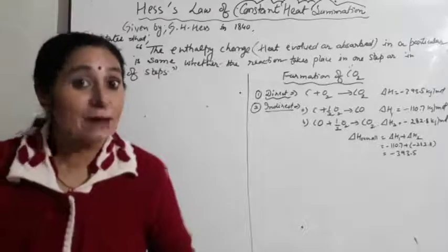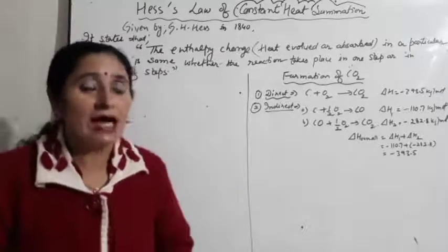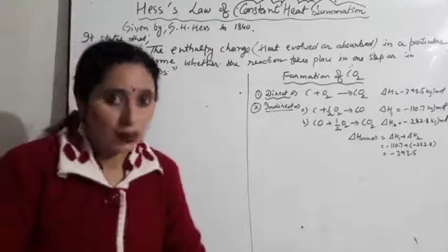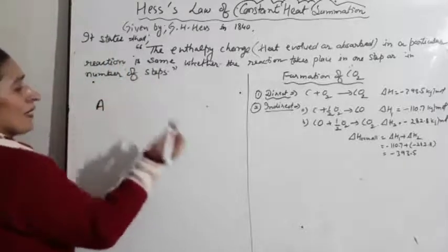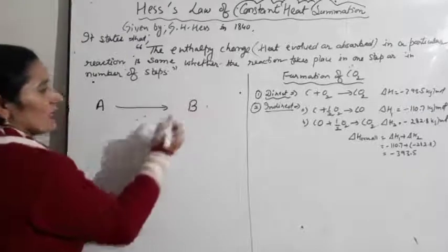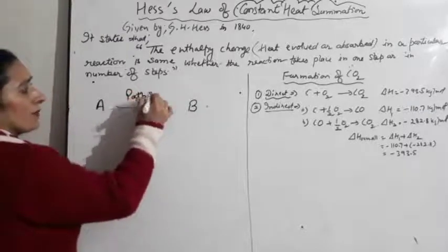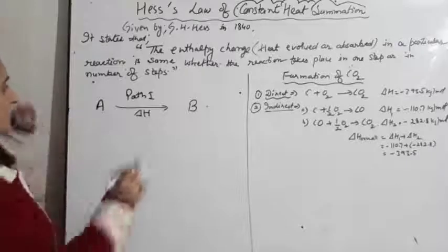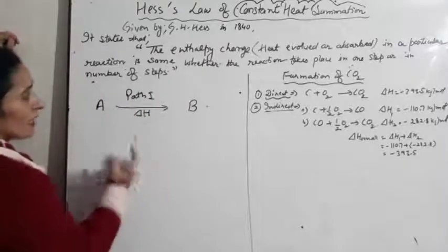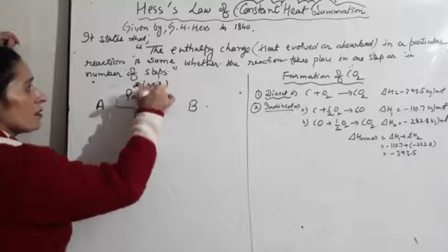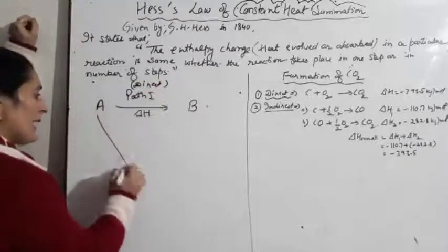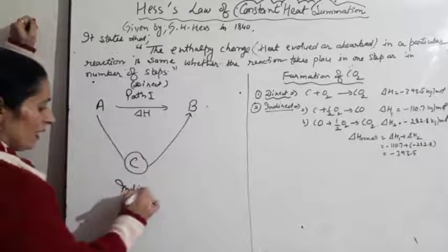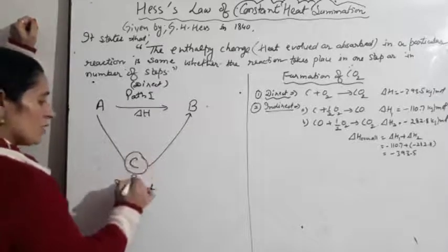Hess was a Russian chemist who gave this law after studying the mechanism of various reactions. He concluded that if we have a chemical reaction where A converts to B — this is path one — this reaction's change in enthalpy is delta H. Now this reaction can happen in two ways: direct (path one), or indirectly where A first becomes C, then C becomes B — this is path two.